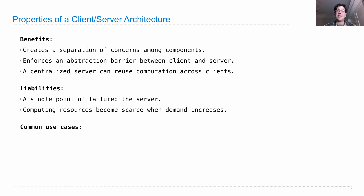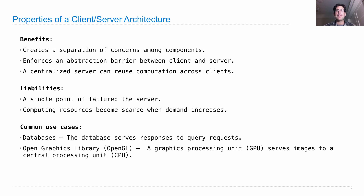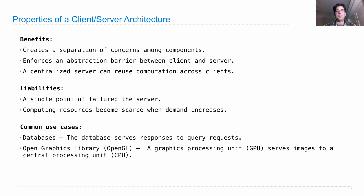There are lots of common use cases of this architecture, which shows up just everywhere in computing. Databases are a classic example — often the database serves responses to query requests over a network. The OpenGL open graphics library, used to render images in graphics-intensive applications, is actually a client-server architecture where the graphics processing unit serves images to the central processing unit, which handles the logic of the program. And of course, internet file and resource transfer, including HTTP, email, and other protocols, are all instances of the client-server architecture.